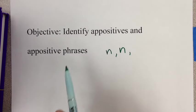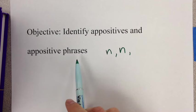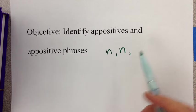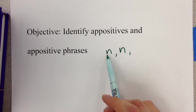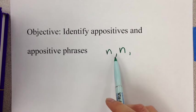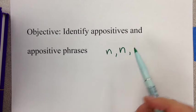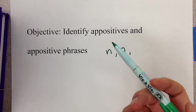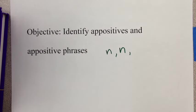So our objective today was to identify appositives and appositive phrases. Remember that an appositive is a second noun after a first noun, and most of the time there are commas on both sides — unless that second noun tells us which one of two or more things we're talking about.